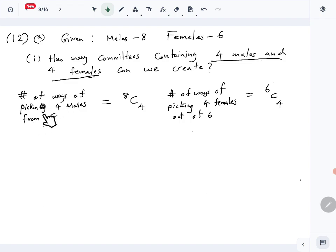First, let's calculate the number of ways of picking 4 males from 8, which is 8C4. Then, the number of ways of picking 4 females out of 6 is given by 6C4.